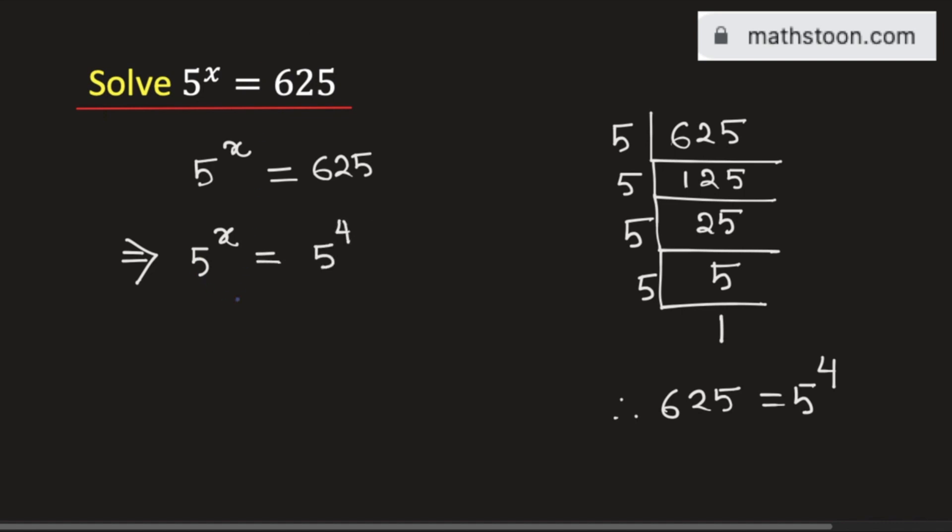As we have the same base 5, the exponents must be equal. That is, we get x is equal to 4.